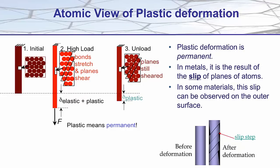We've already looked at the atomic view of plastic deformation. When we apply the load, there are two components: the elastic deformation, which occurs because of the bonds being stretched, and the plastic component, where the ductility of the metal results from planes of atoms slipping past one another. When we release the load we recover our elastic deformation — the bonds snap back — but there is no reason for the slip planes to return to their original position. So we get permanent plastic deformation, and we see slip steps on the outer surface of the metal crystal.